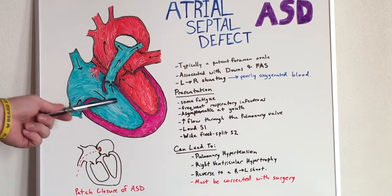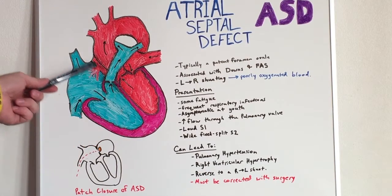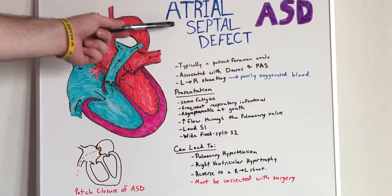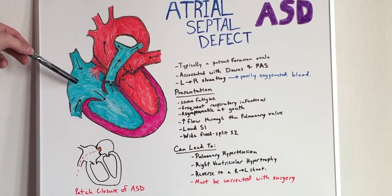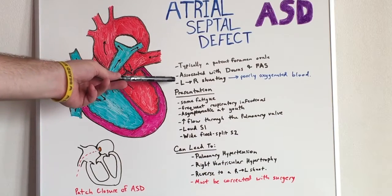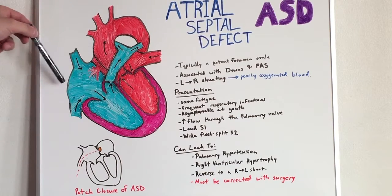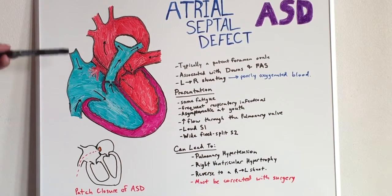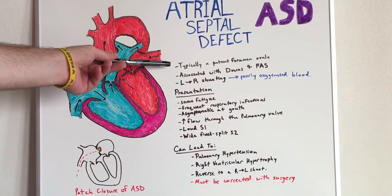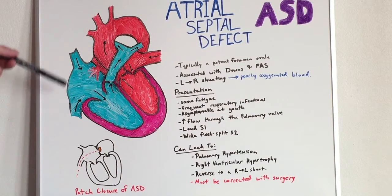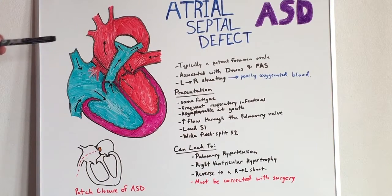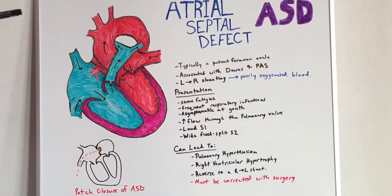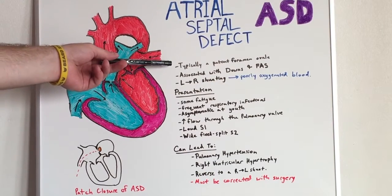The atria and ventricles are typically separated by their respective septa. However, in atrial septal defect there is a defect in the atrial septum which allows left-to-right shunting of blood. This is typically due to a patent foramen ovale — an embryonic structure which allows shunting of blood — that continues to remain open.